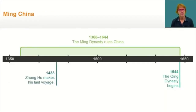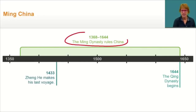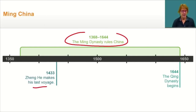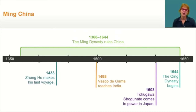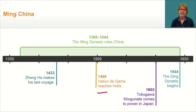Let's take a look at the time period covered in this lesson. The Ming Dynasty ruled China for almost 300 years, between 1368 and 1644. Zheng He made his last voyage in 1433. Vasco da Gama became the first European sailor to reach India, which began to increase trade in the Indian Ocean and European exploration in Asia. The Tokugawa Shogunate came to power in 1603. A lot was going on in the world as China kept to its isolationist policies.